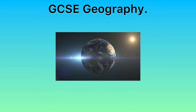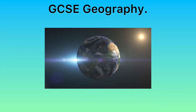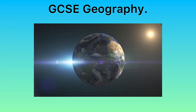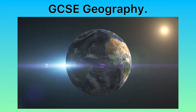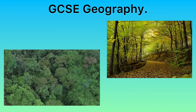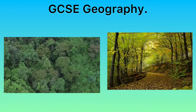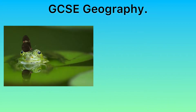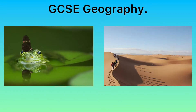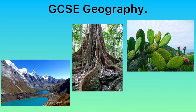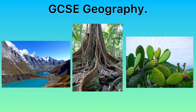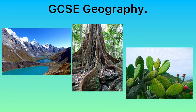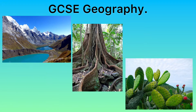Finally, onto section C where you will investigate ecosystems, biodiversity and management. You will examine ecosystems such as tropical rainforests and deciduous woodlands, understanding ecosystems both on a small scale along with global biomes. By understanding the characteristics of these precious places we can see how they're being affected, along with how we can protect them and use them sustainably in the future.